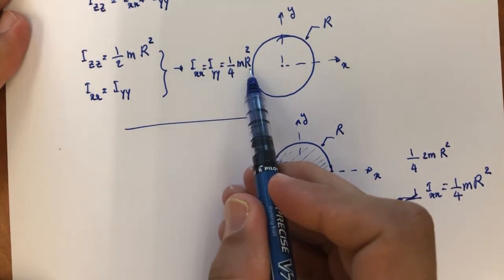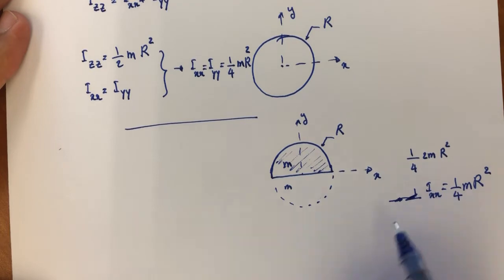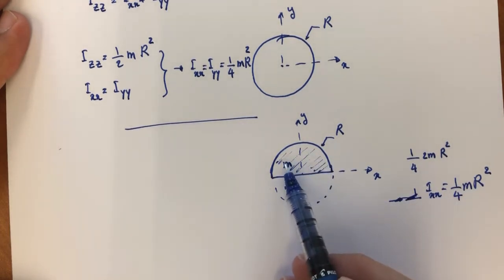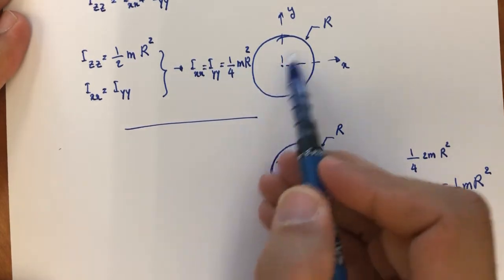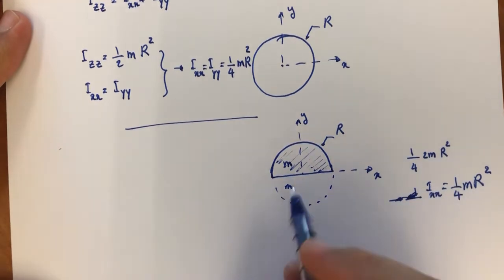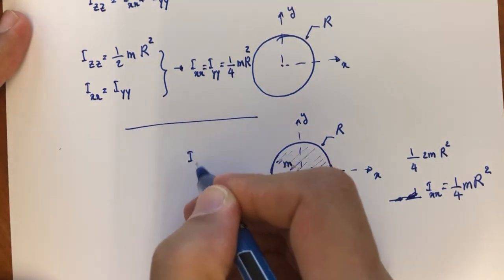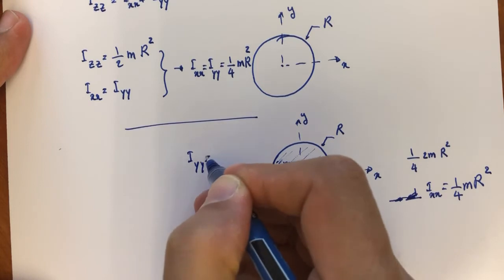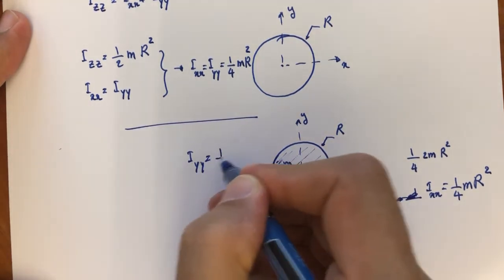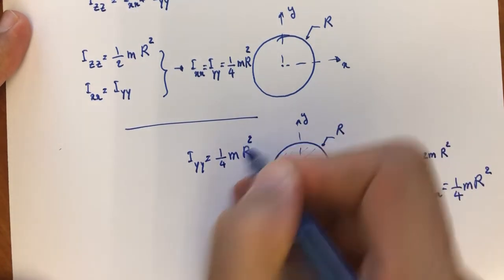So for a full disk and for a half-disk, the formula I_xx equals one-quarter times m times r squared looks identical — but it's important to remember that m refers to the mass of whichever object you're considering. Similarly, for this half-disk, I about the y-axis is also one-quarter times mass times r squared.